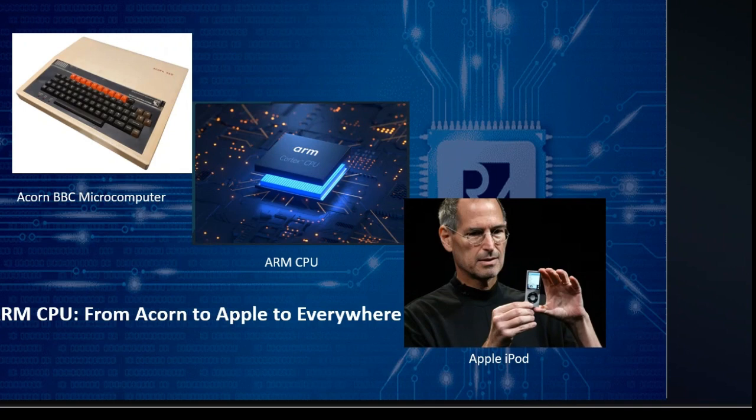The ARM RISC revolution: in 1982, Acorn Computers wanted a more modern CPU but did not want to follow Intel, so they created their own — the ARM CPU, based on RISC principles. It might have faded away if not for its power efficiency, which caught Steve Jobs' attention for the Apple Newton. This marked the start of ARM's rise, later powering nearly every smartphone and tablet.